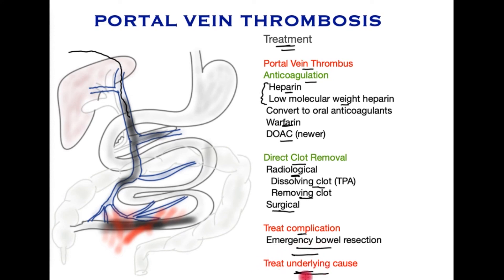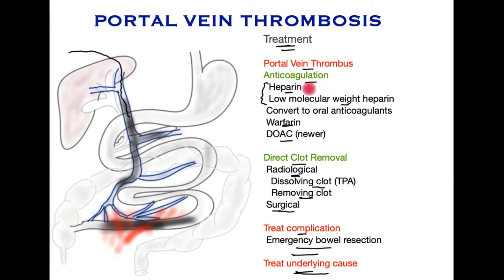Finally and most importantly, the underlying cause for portal vein thrombosis must be found and treated. Anticoagulation should continue for at least six months if the underlying cause is treatable. If it is not treatable or a cause is not found, it is sometimes important to continue blood thinners in the long term, recognizing the risks and complications of this treatment. This completes a brief overview — if you have any comments, please do share.